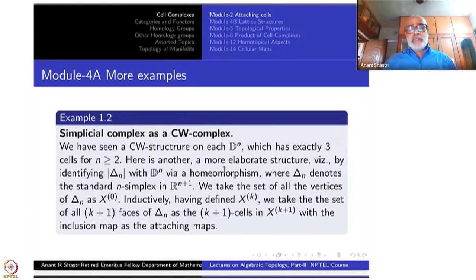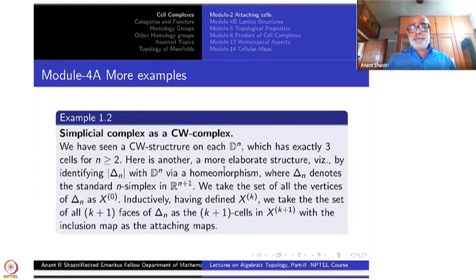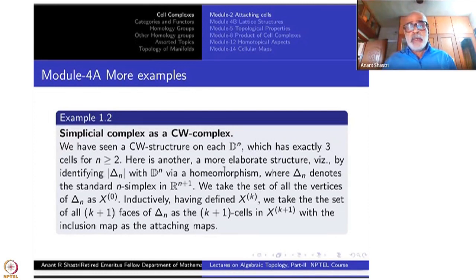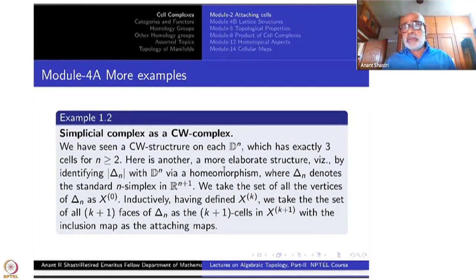One such thing is thinking of D^n as the underlying space for |Delta_n|, where Delta_n is an n-simplex in R^{n+1}. An n-simplex in R^{n+1} is the convex hull of standard basis elements e_1, e_2, ..., e_{n+1}.